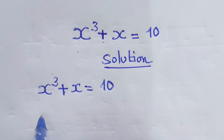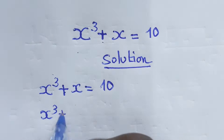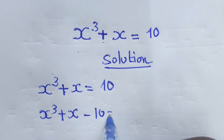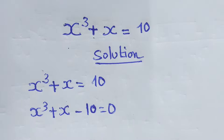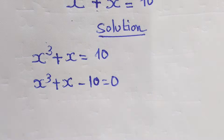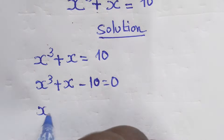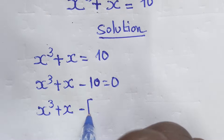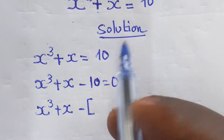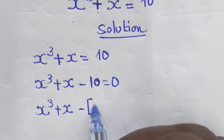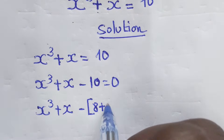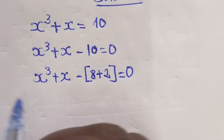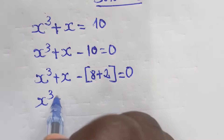...is x³ + x - 10 = 0. Then what you have to do is find numbers equal to 10. 10 can be written as 8 + 2, which equals 0.